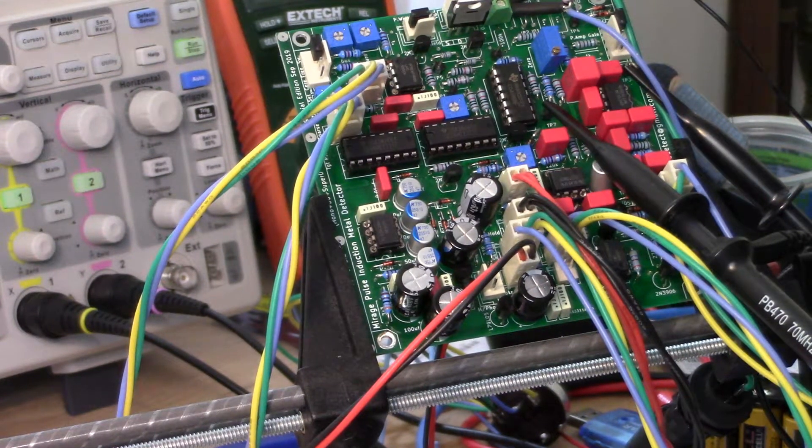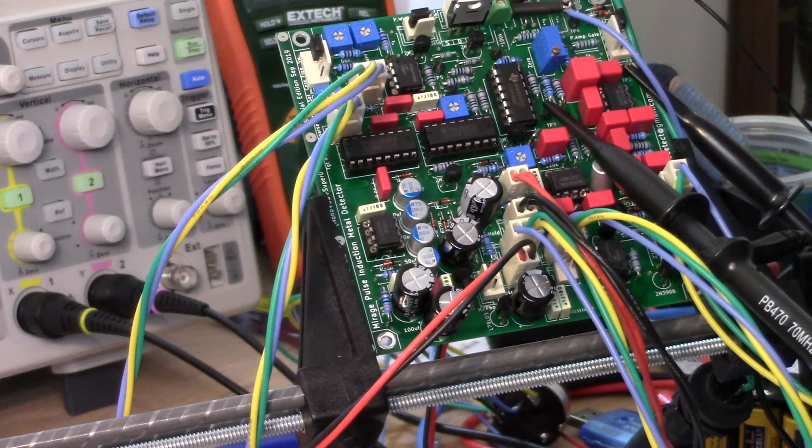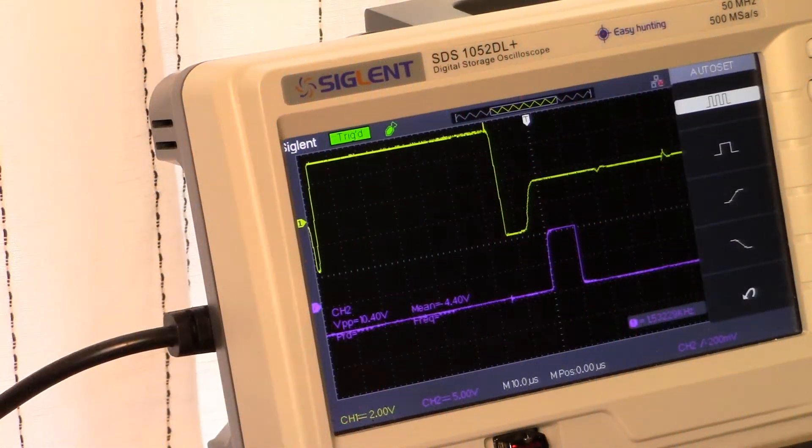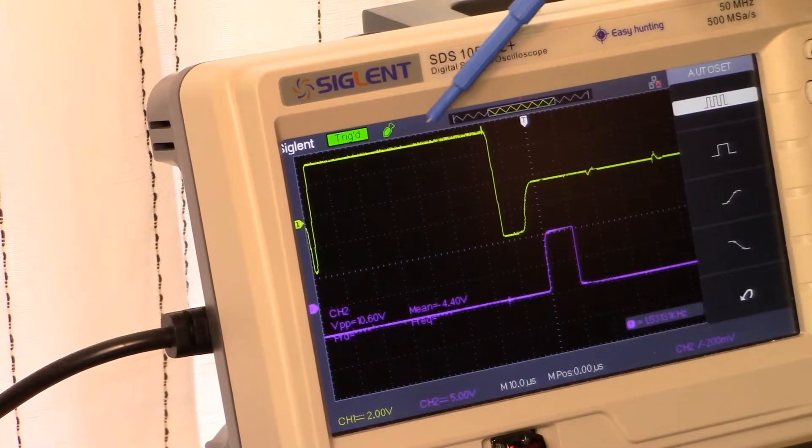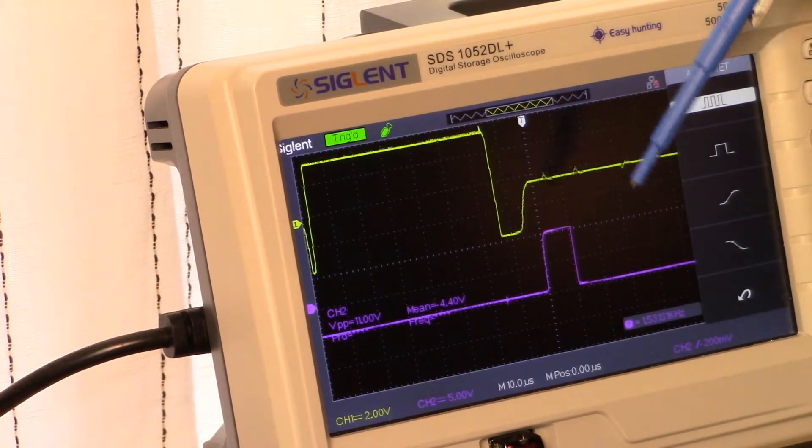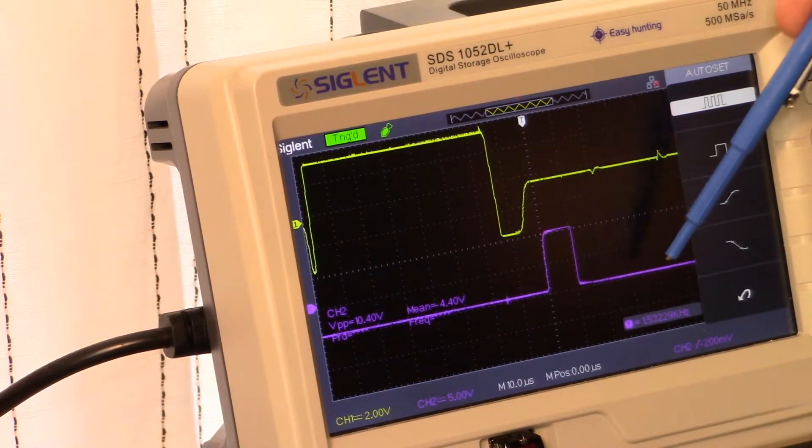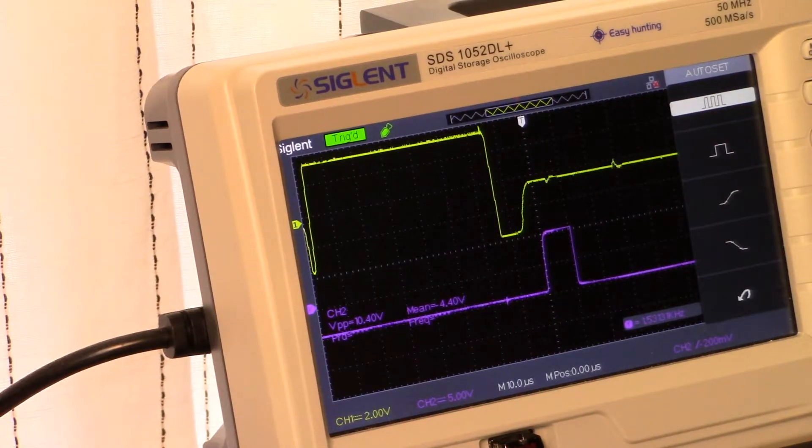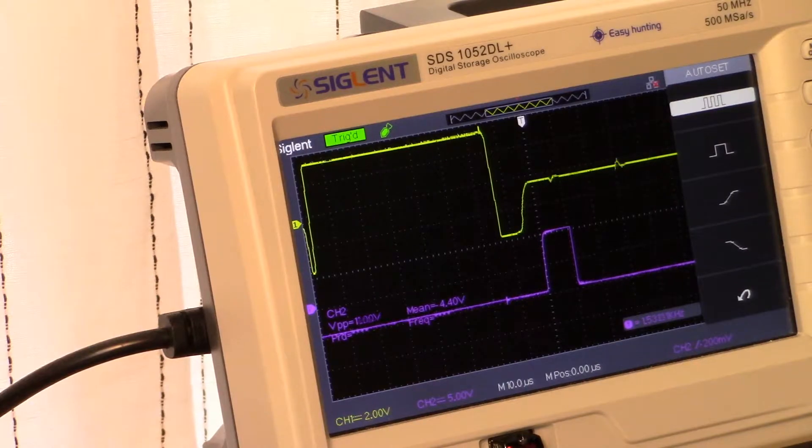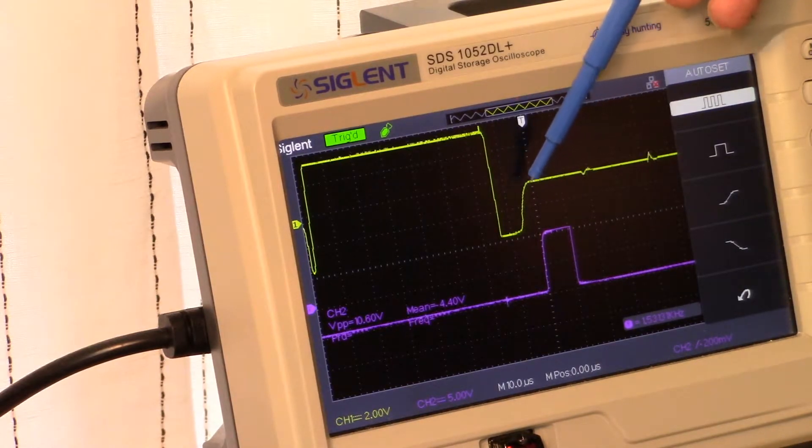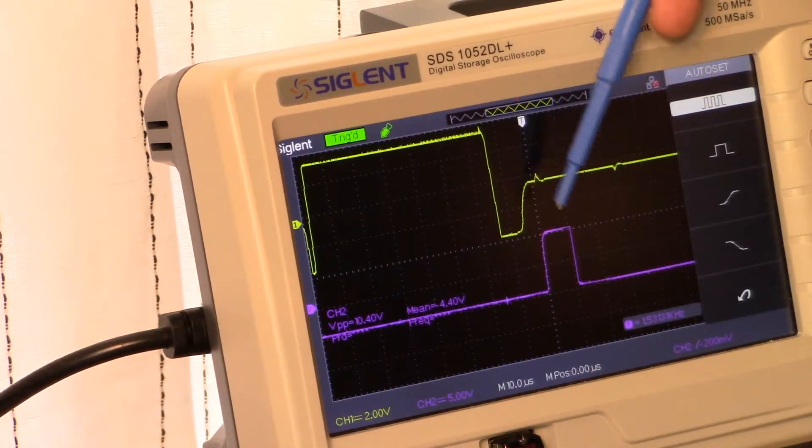Okay, channel one in yellow, channel two in purple. And what we're going to do is try to bring these signals just a little bit closer together, close up that window between the two of them. We've got the flyback from the coil here, and here's our sample.